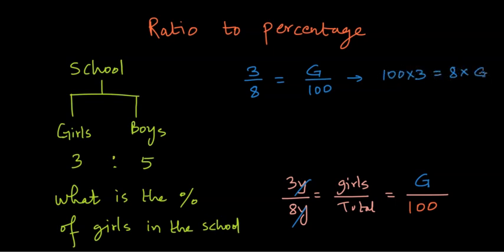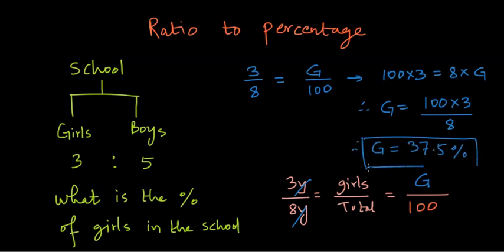And to find g we can cross multiply, so 100 times 3 is equal to 8 times g, therefore g is equal to 100 times 3 divided by 8, and therefore g becomes 37.5%. And this is how we found the percentage of girls when the ratio of girls to boys was given to us.